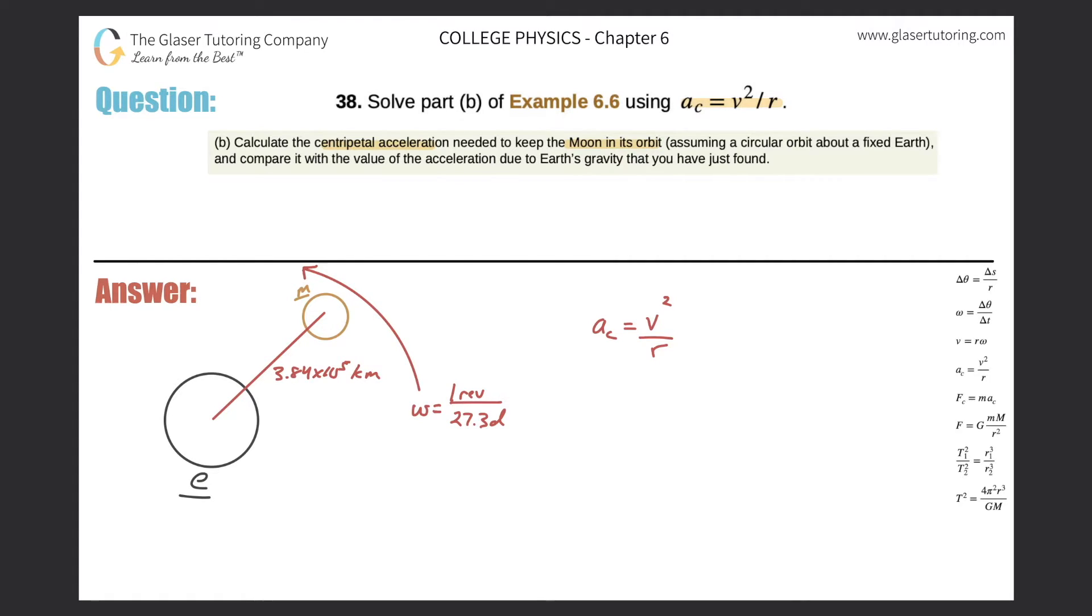So in order to find the centripetal acceleration that the moon is experiencing here, I need to know the linear velocity of the moon divided by then the radius between the moon and the rotating point, which is here. Well, do I know the linear velocity? No, but I did give you, and you do know the angular velocity. So you might say, well, can I connect linear to angular?